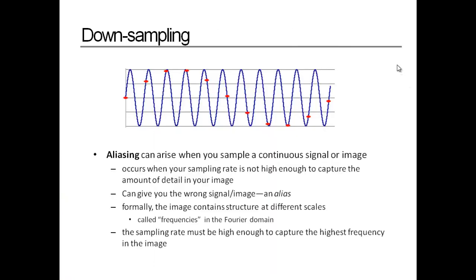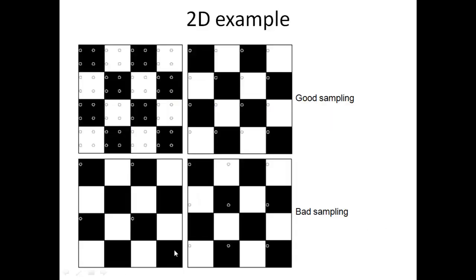Aliasing can arise when you sample a continuous signal or image. It occurs when the sampling rate is not high enough to capture the details in the image. According to the Nyquist rate or Shannon sampling theorem, the sampling rate should be high enough to capture the highest frequency in the image.